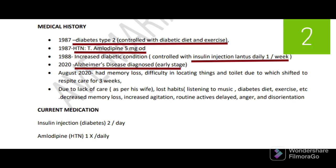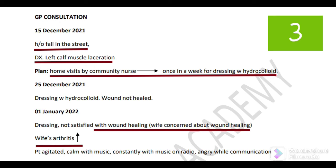The current medication includes insulin injection twice daily and amlodipine for hypertension 5 mg once daily. Regarding the GP consultation — the scenario starts on 15 December 2021. There is a history of a fall in the street, so the patient was seen in GP consultation. You may get confused because this GP consultation is given here. The diagnosis is left calf muscle laceration — only a laceration was found. Home visits by the community nurse were arranged once weekly for dressing with hydrocolloid.